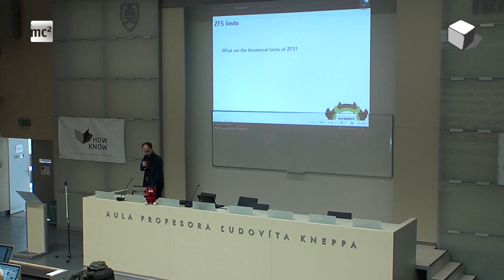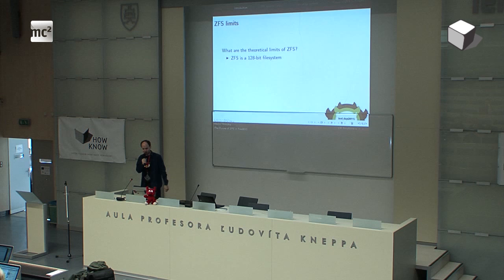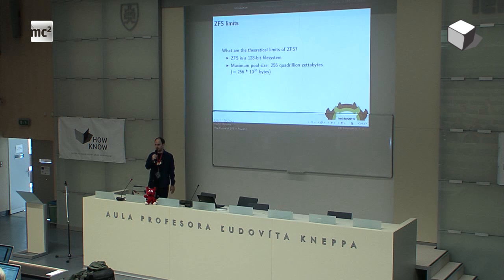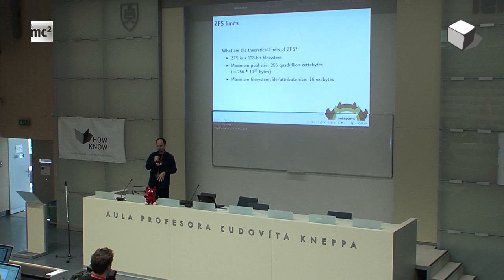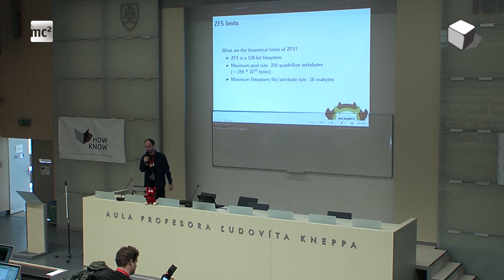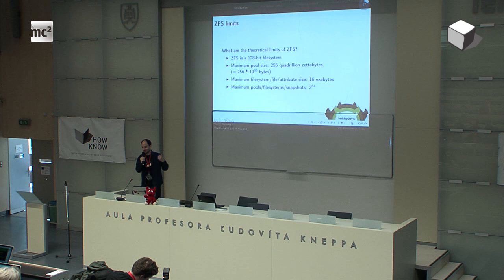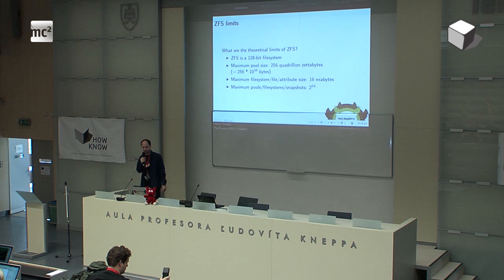Let's look at the limits of ZFS. First, it is a 128-bit file system, so it is quite future-ready — we don't have 128-bit computers yet but the file system is already designed this way. The maximum pool size — the maximum storage space allocatable by ZFS — is 256 quadrillion zettabytes. The maximum size of a file system, a single file, or even an attribute of a file is 16 exabytes. One file can be 16 exabytes. The maximum number of pool file systems and snapshots is 2 to the power of 64.